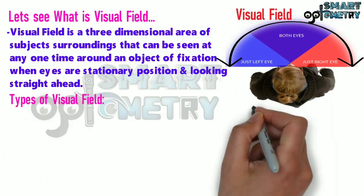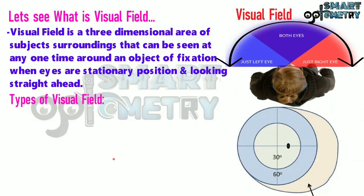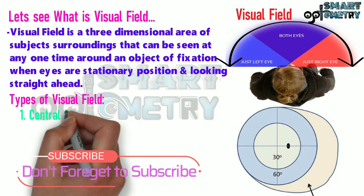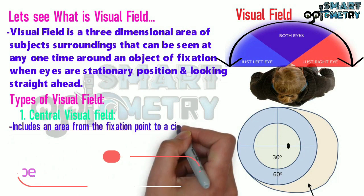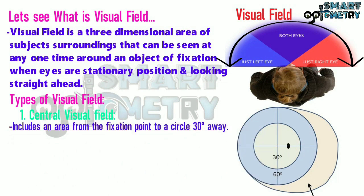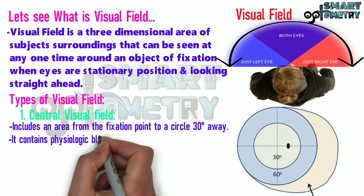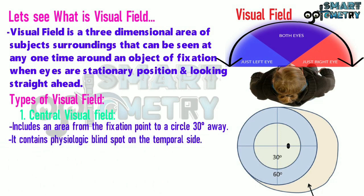Types of visual field: First, the central visual field. It includes an area from the fixation point to a circle 30 degrees away. It contains the physiological blind spot on the temporal side. Here you can see the central visual field along with the blind spot.